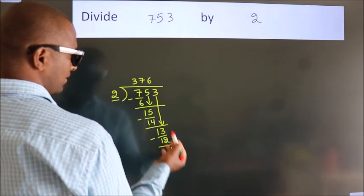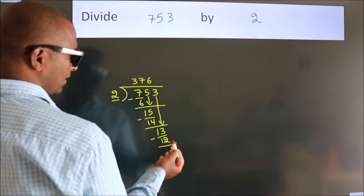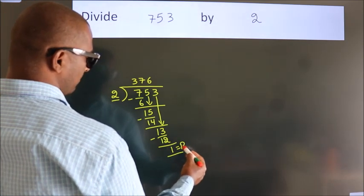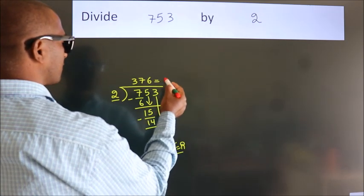After this, no more numbers to bring down, so we stop here. This is our remainder. This is our quotient.